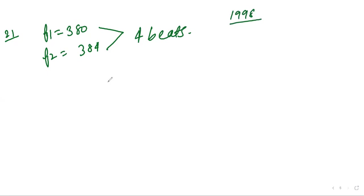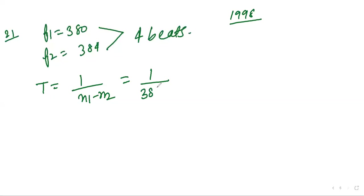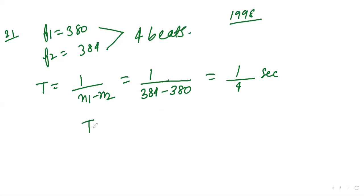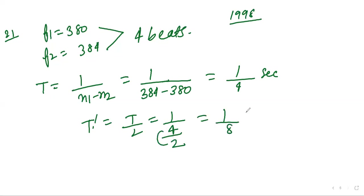The beat period is T = 1 / (n₁ − n₂) = 1 / (384 − 380) = 1/4 seconds. The time between maximum and minimum is half of that: T' = T/2 = (1/4)/2 = 1/8 seconds. So the answer is 1/8 seconds.